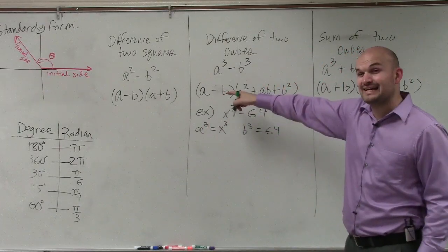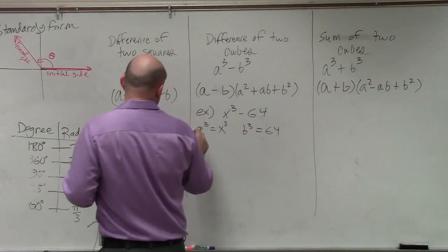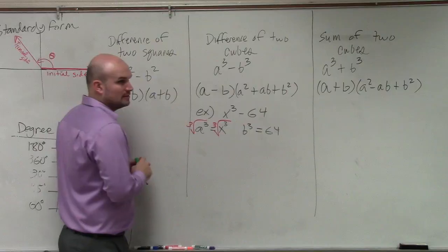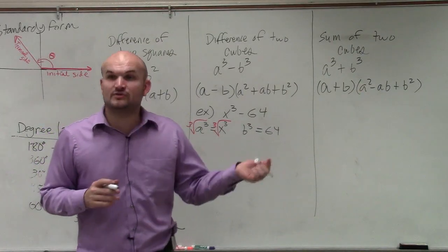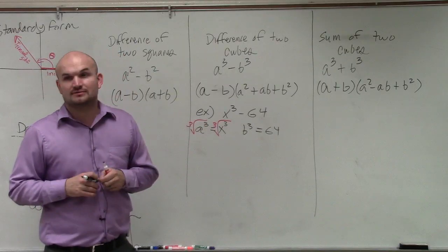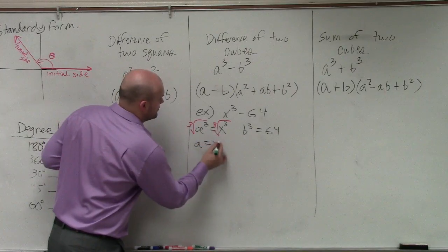So I want to figure out what a is. If I have a cubed to solve for a, I have to take the cube root. Cube root is saying what number multiplied by itself three times. What number multiplied by itself three times gives you x cubed? x. So a is equal to x.